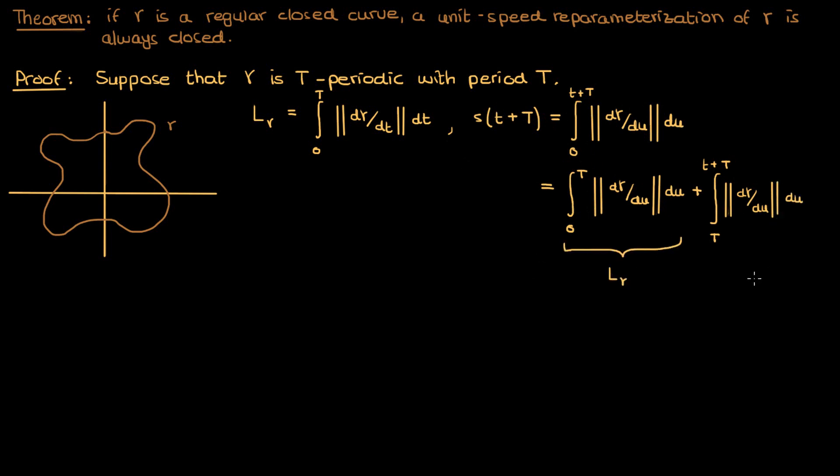For the second integral, we can make a variable substitution by letting V equal U minus T, in which case we end up with the following. It should be pretty easy to see that now we've got the definition of the arc length as the other term, so that S of t plus T is just L_gamma plus S of t.